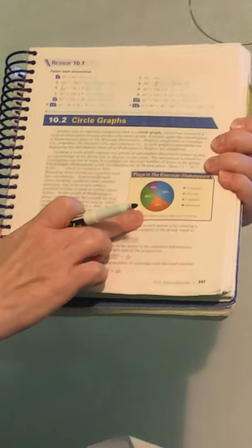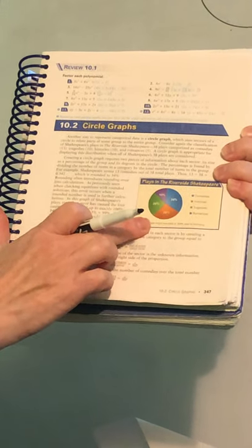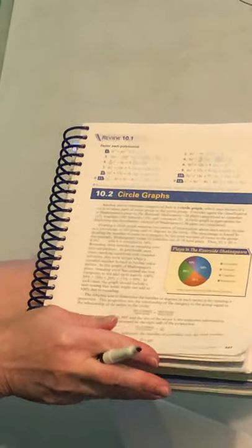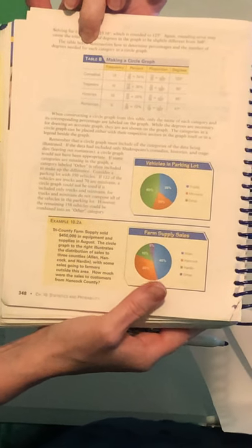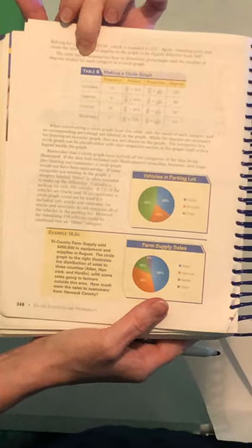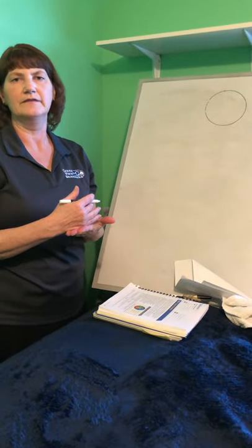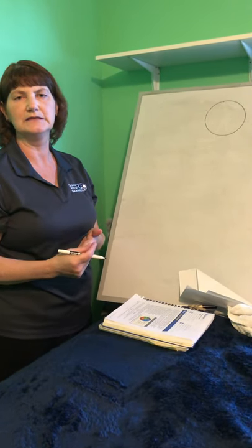If you look at the Riverside Shakespeare Plays on page 347, we have four different categories. You can see there in your graph that we have comedies, histories, tragedies, and romances. If you'll flip the page in your book, you'll see table B, making a circle graph. And that's what we're going to be looking at here today. There's going to be a slight variation between what you learned in middle school and what we're going to look at today. Because in middle school, you learned to round your proportions, round your percentages, and then use that rounded value to come up with another number. And we don't want to do that. We want to be a little more exact. So we're always going to work with proportions.